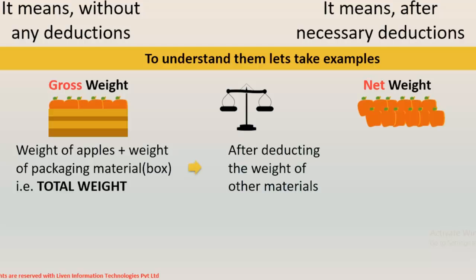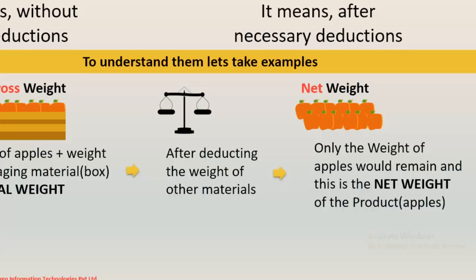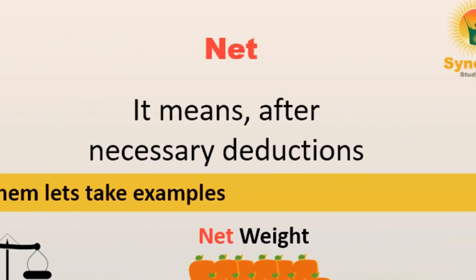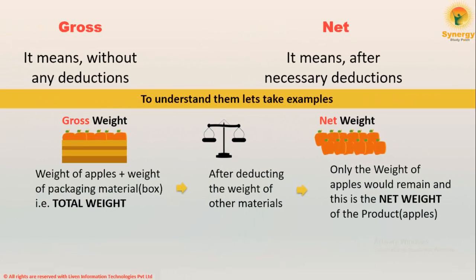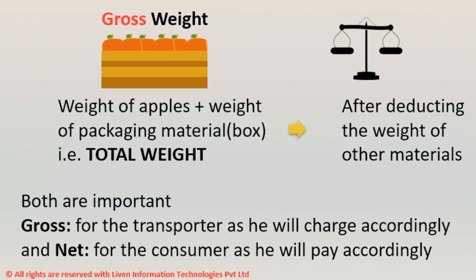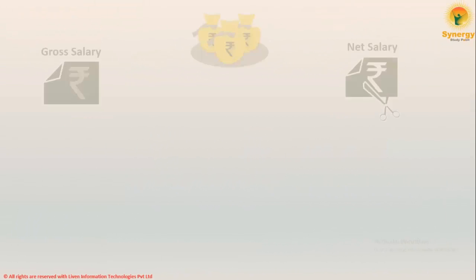After deducting the weight of the box, only the weight of the apples remains — this is the net weight. So gross weight means without any deductions, and net weight means after necessary deductions. It is important to note that both gross and net are equally important: gross for the transporter, as he will charge accordingly, and net for the consumer, as he will pay accordingly.